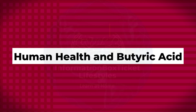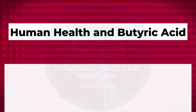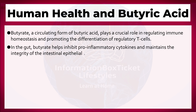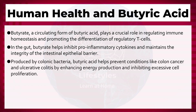Human health and butyric acid: butyrate, a circulating form of butyric acid, plays a crucial role in regulating immune homeostasis and promoting the differentiation of regulatory T-cells. In the gut, butyrate helps inhibit pro-inflammatory cytokines and maintains the integrity of the intestinal epithelial barrier. Produced by colonic bacteria, butyric acid helps prevent conditions like colon cancer and ulcerative colitis by enhancing energy production and inhibiting excessive cell proliferation.